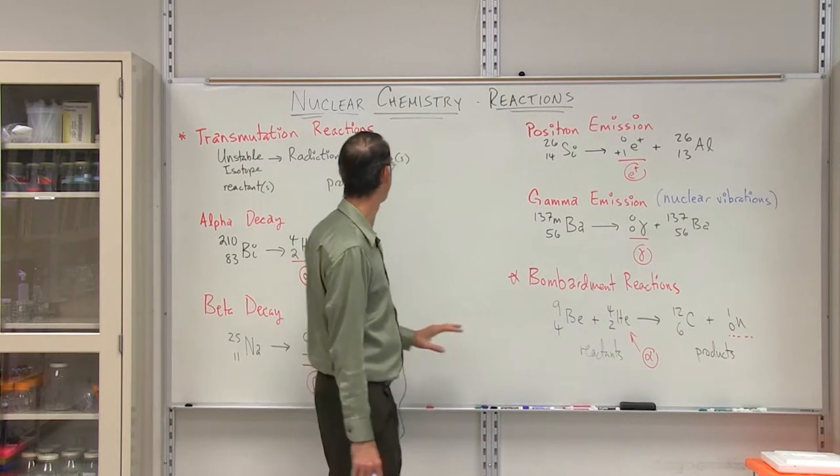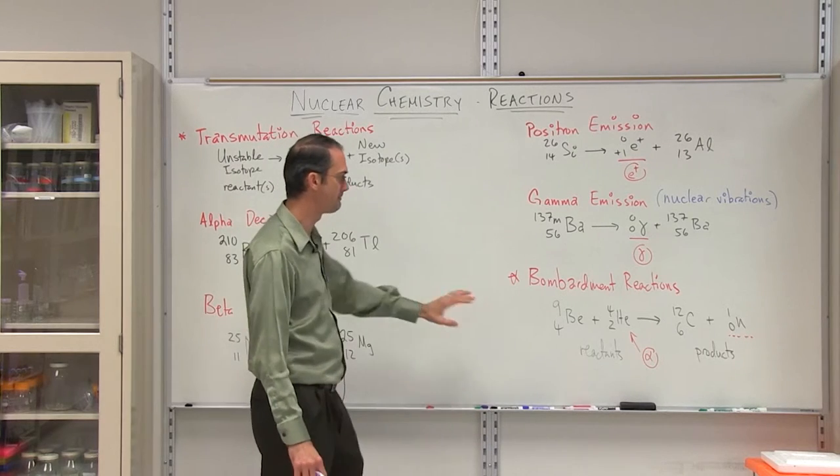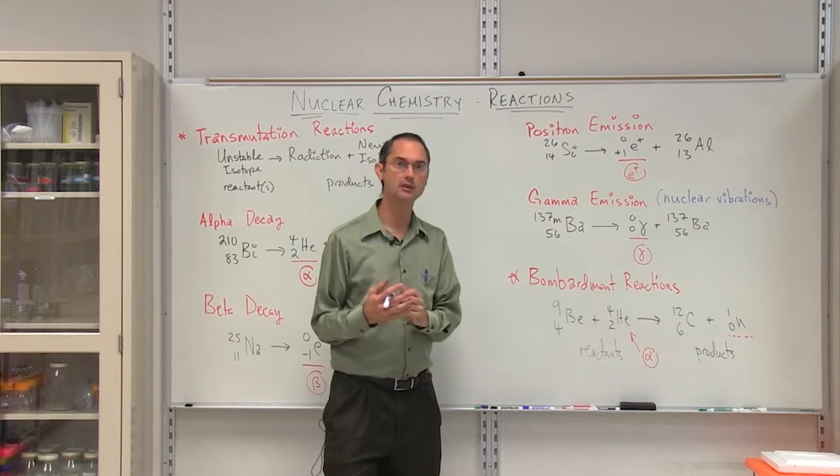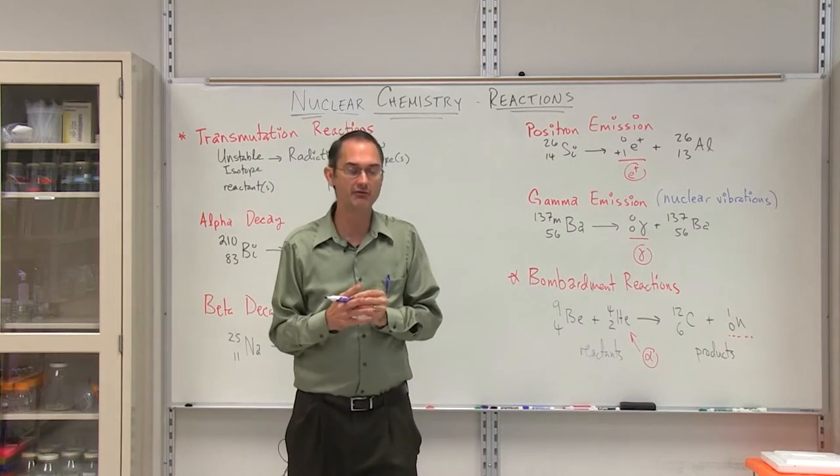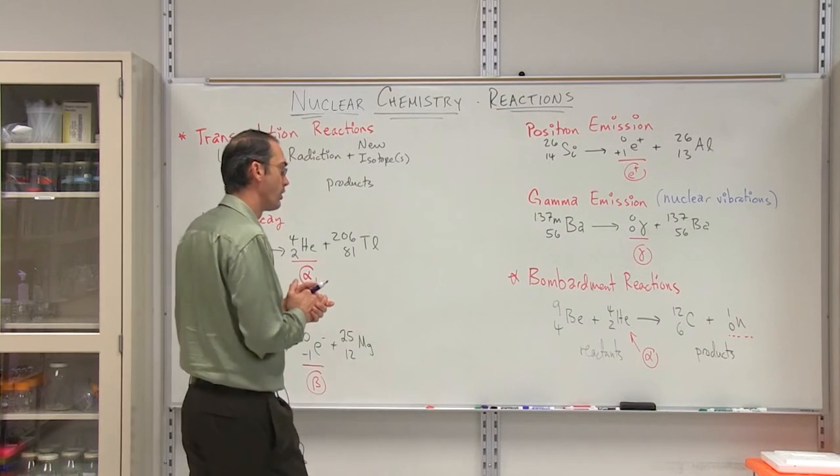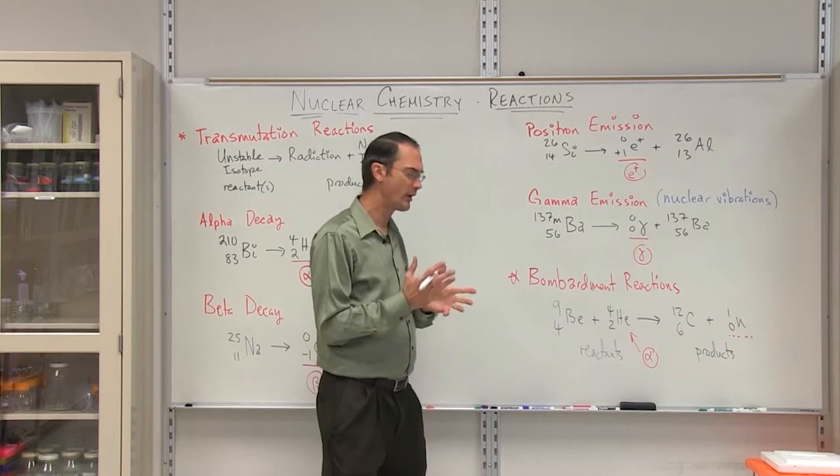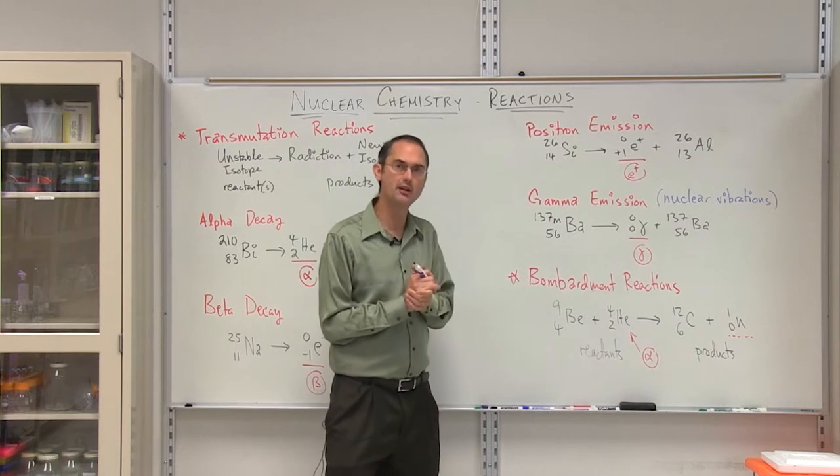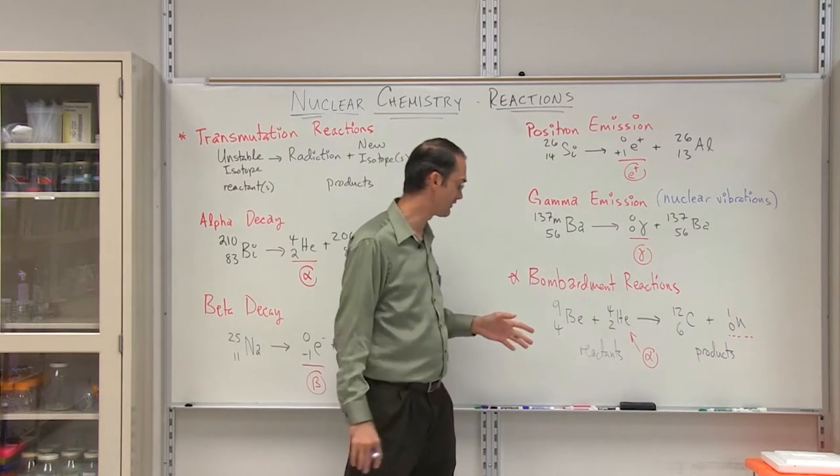And finally, we have a second type of reaction, not a transmutation reaction, but a bombardment reaction. This is what commonly occurs either inside of a particle accelerator, a particle collider, or when light radiation, such as an alpha or a beta particle, is going to interact with other types of material.